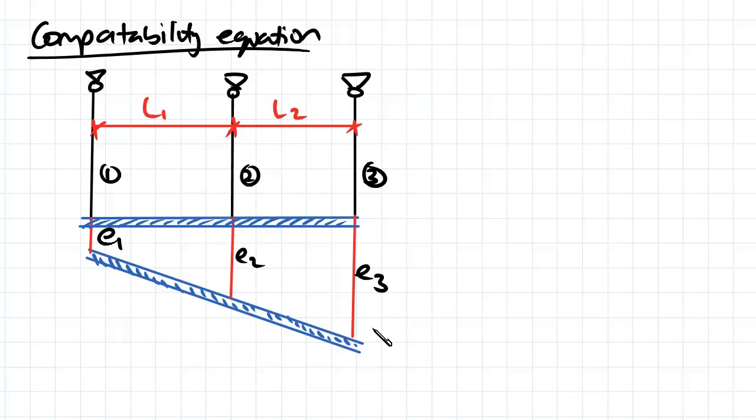Now, because we're looking at a rigid beam here, the gradient is going to be constant. Therefore, the compatibility equation is essentially saying that e2 minus e1 over l1 is going to be equal to e3 minus e1 over l1 plus l2.